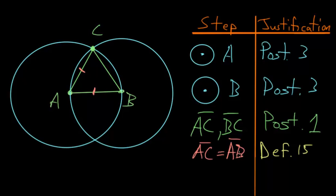And with this same logic, we can notice that lines CB and AB are radii of the circle with center at B. So they are equal to each other. So BC is equal to AB. And again, this is from definition 15 for a circle.